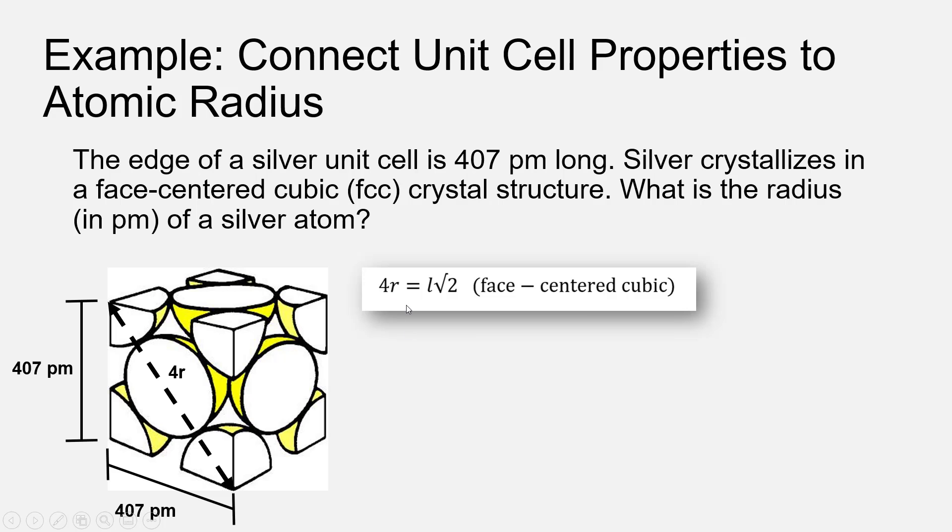So using the Pythagorean theorem, we find that the equation for the radius in terms of the edge length foils down to 4r = L√2 for the face-centered cube. And of course we saw in the previous slide that each type of unit cell gives rise to a different formula relating the edge length to the atomic radius.